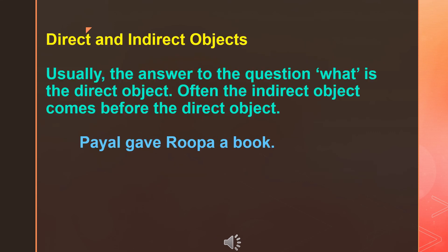Very often we require two objects with a transitive verb. They are the direct object and the indirect object. Usually, the answer to the question what is the direct object, and the indirect object comes before the direct object. The answer to the question what is the direct object, and the answer to the question whom is the indirect object.